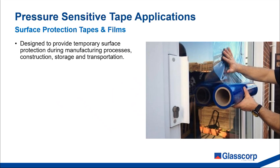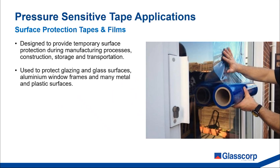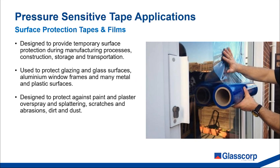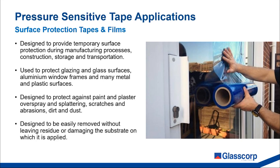Surface protection tapes and films are used to provide temporary protection to surfaces during manufacturing processes, construction, storage, and transportation. They can be used to protect glazing and glass surfaces, aluminium window frames, and many metal and plastic surfaces. They're designed to protect against paints and plaster overspray and splattering, dirt and dust, and scratches and abrasions.